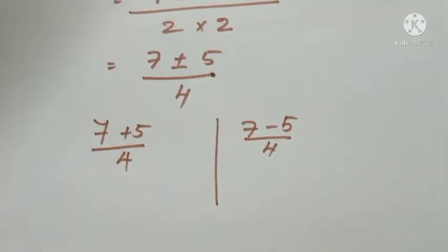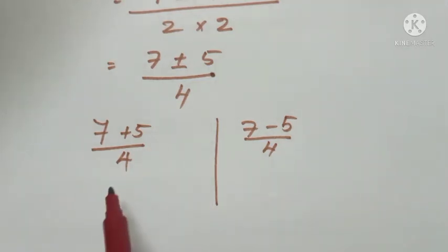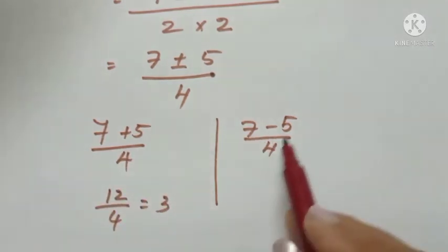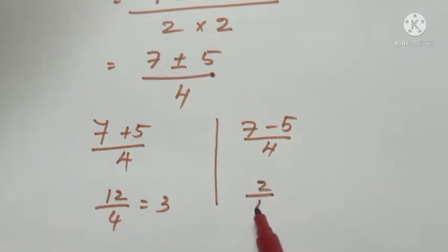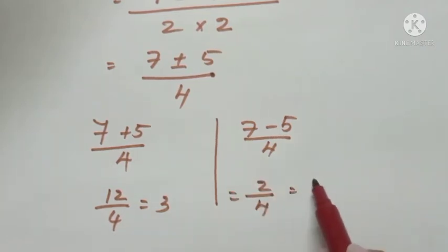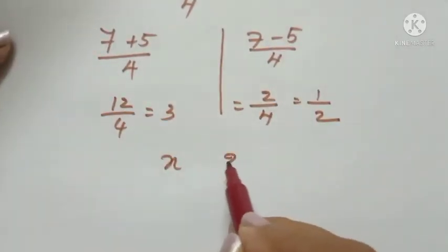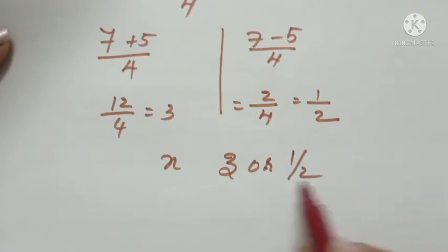That means x = (7 + 5)/4 or x = (7 - 5)/4. So (7 + 5)/4 = 12/4 = 3, and (7 - 5)/4 = 2/4 = 1/2. Therefore, the roots are 3 and 1/2.